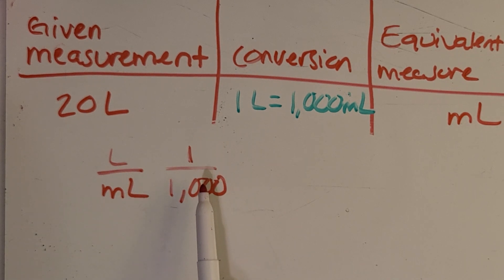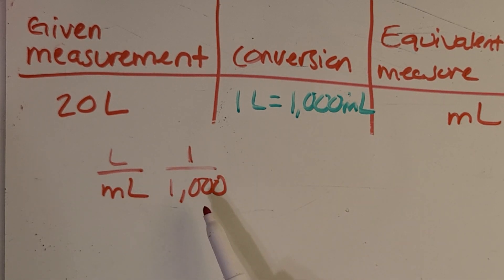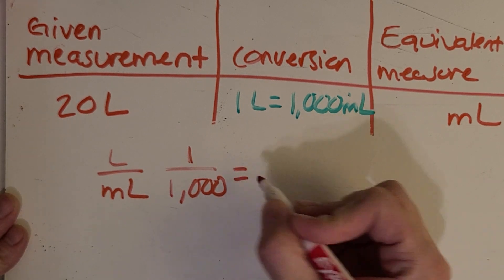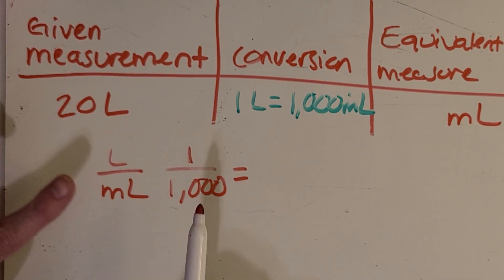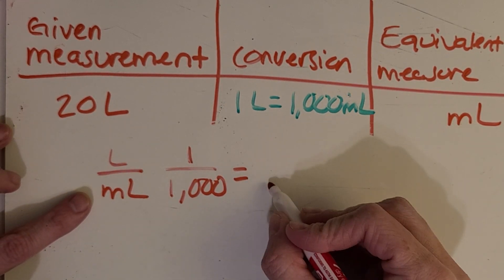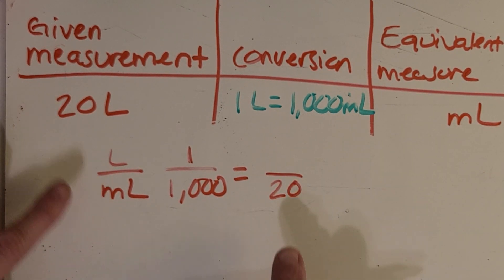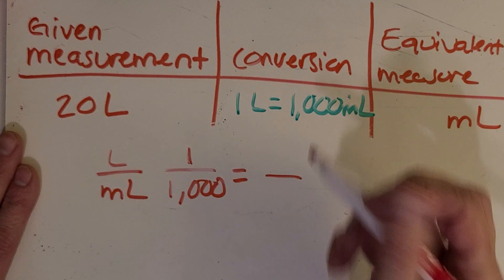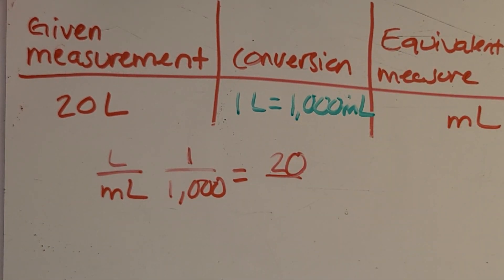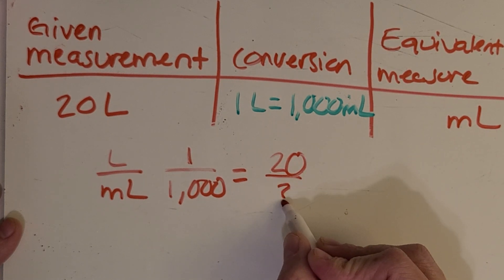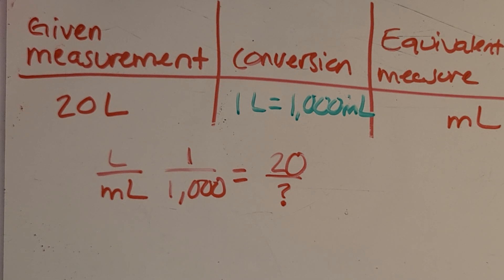You'll probably notice that the metric system is so much easier to work with because everything is based on 10, 100, or 1,000 — it just makes the math very easy. Now let's set up the rest of this proportion. We have 20 liters, and I always pay attention to units so I don't accidentally mix things up — it's 20 liters, not 20 milliliters. Then we're looking for that mystery amount of milliliters. Pause the video and see if you can figure out the pattern.